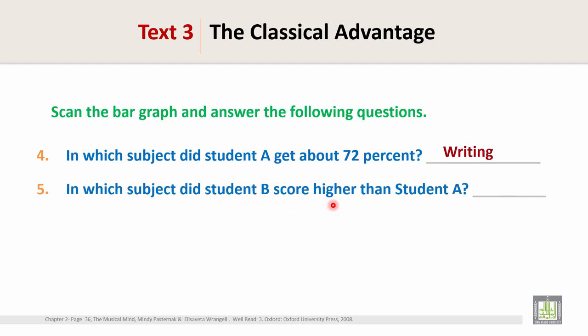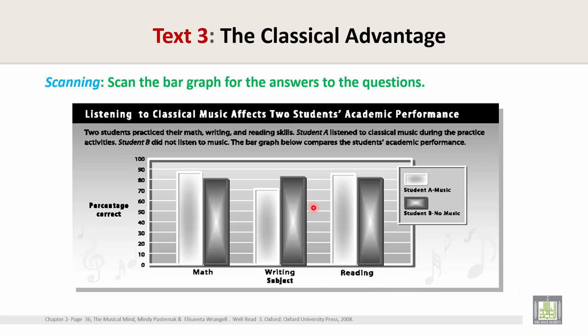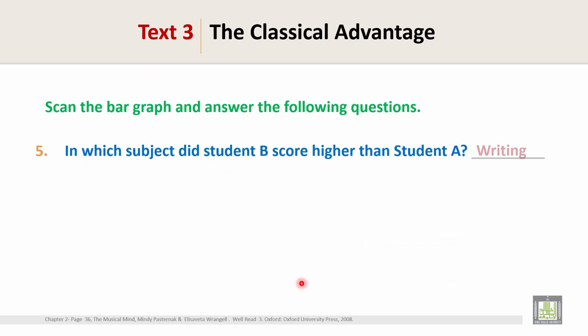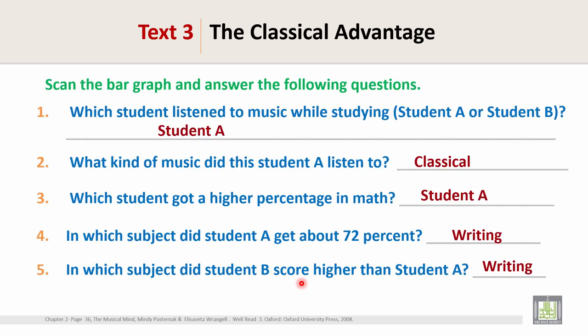Question 5: In which subject did Student B score higher than Student A? Look at the graph. The black color represents Student B. Student B got a higher percentage than Student A in the writing subject. So the answer is writing. Here are all your answers — this is the end of Text 3.